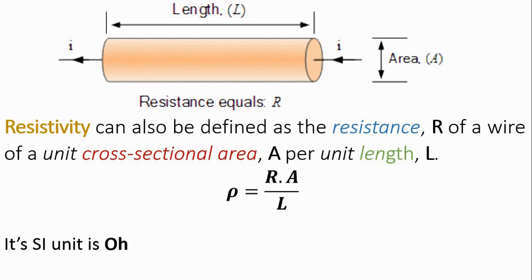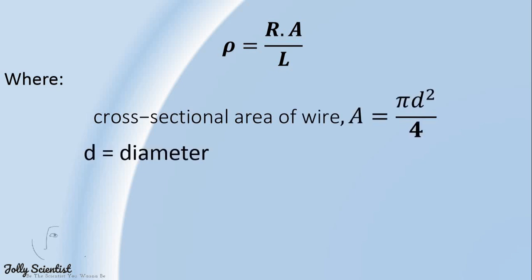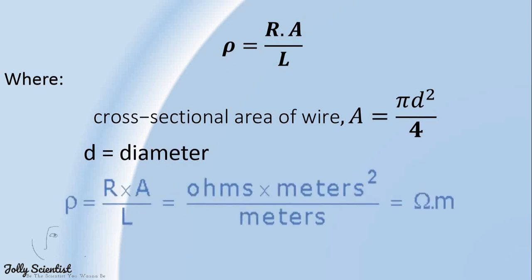Its SI unit is ohm-meters. The cross-sectional area A is pi times D squared divided by 4, where D is the diameter. R is in ohms, A is in square meters, and L is in meters. So we have ohm-meters.